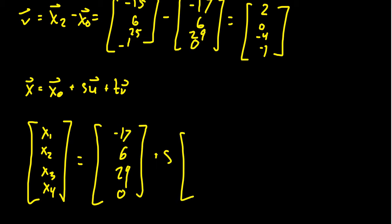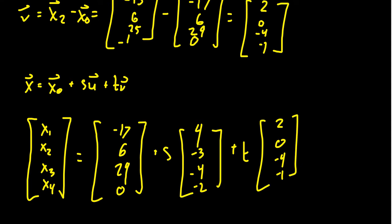For our first spanner u, we can't see it on the screen anymore, but we had (4, -3, -4, -2). And then for the second spanner, we can still see it (2, 0, -4, -1) right there. That's our spanner. And this gives us the vector equation.